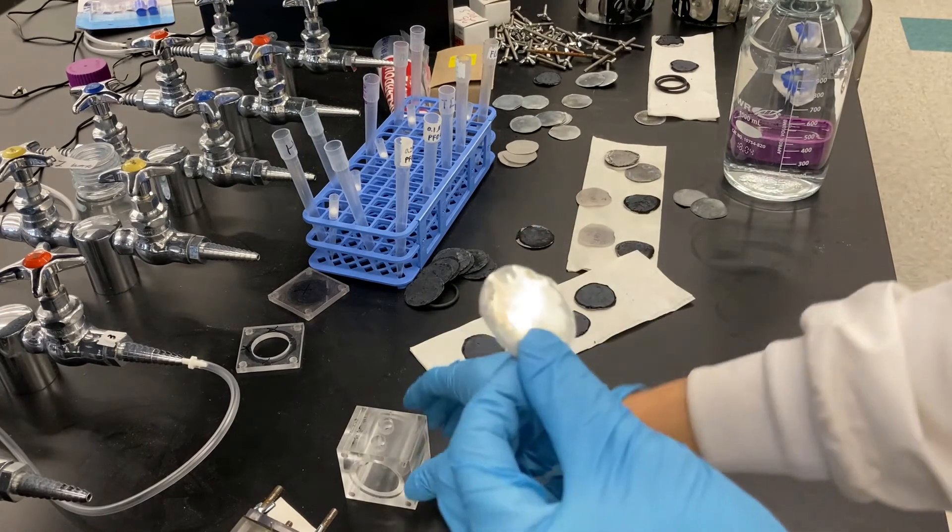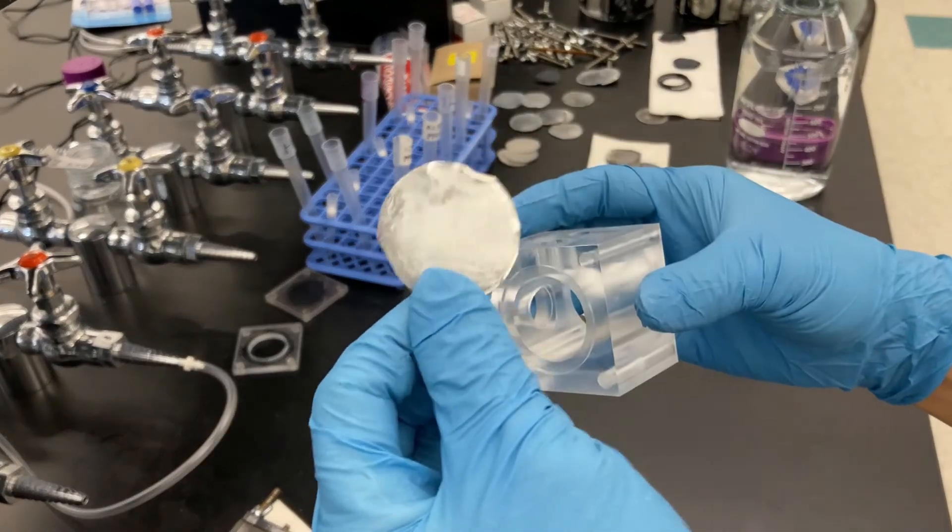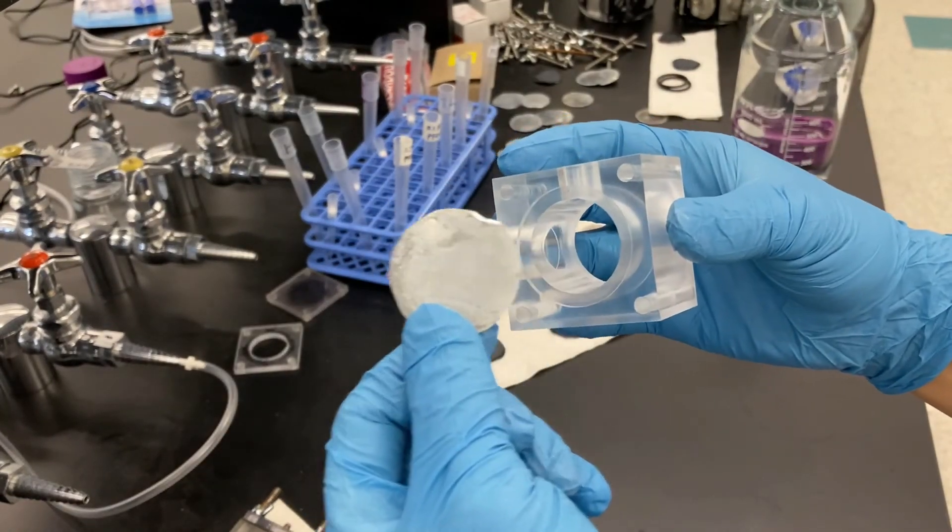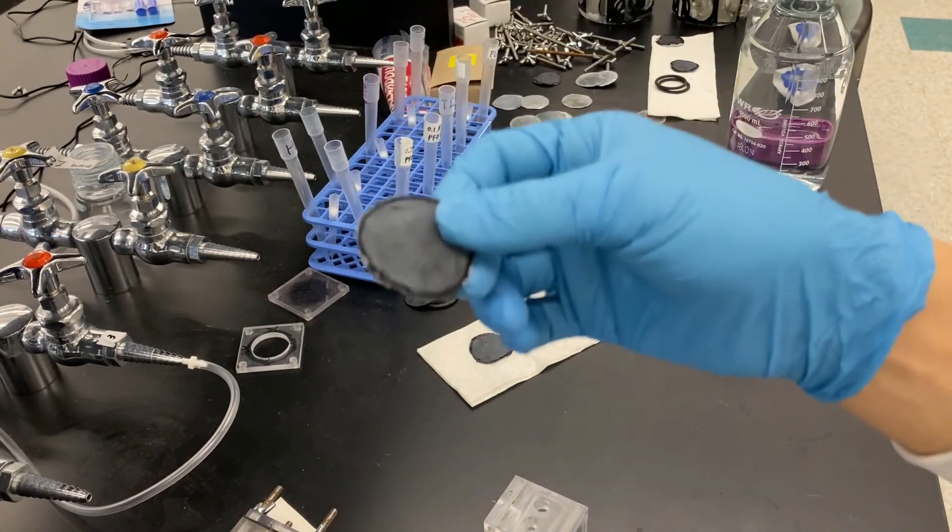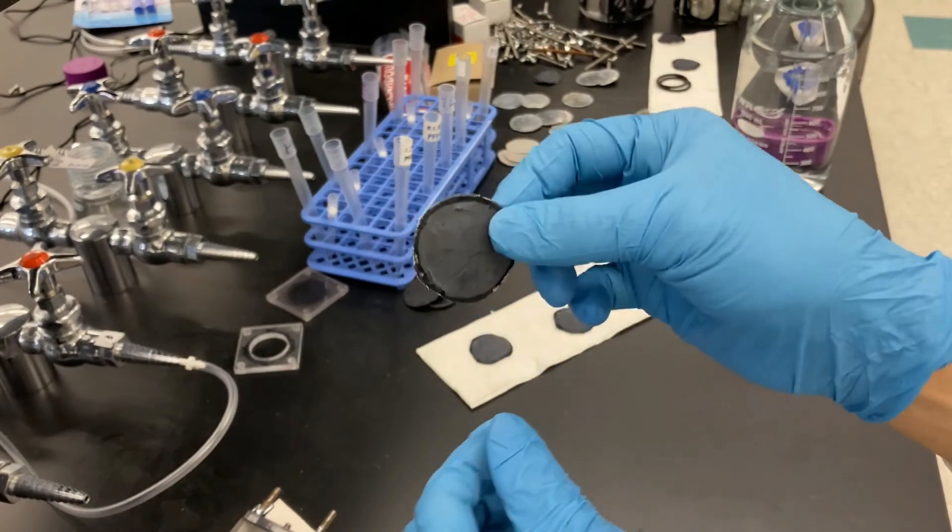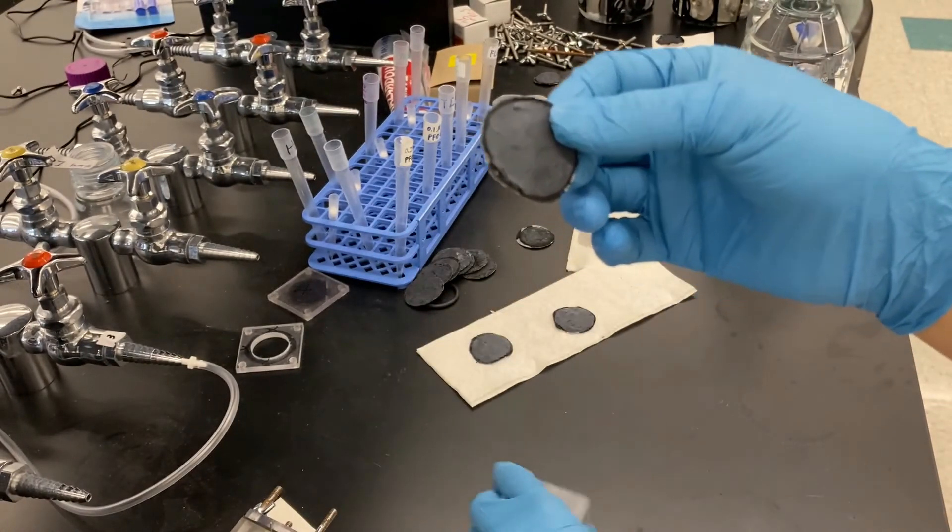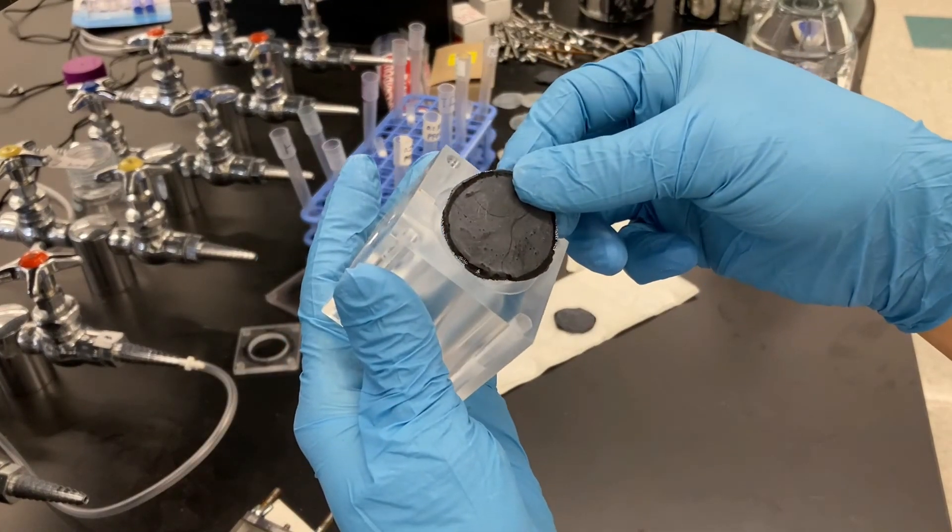This is a metal anode we use. It is a circular shape and placed at one side of the chamber. And this is a cathode, especially we use activated carbon cathode for our experiments. You can place on the side.